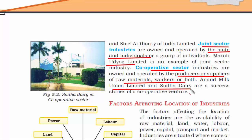A good example would be: suppose you own a dairy farm, so you'll produce all kinds of milk products like cheese, butter, curd, etc. Think about what businesses can be your client — you will serve the food industry. This is the meaning of producers or suppliers of raw materials owning and operating the business.